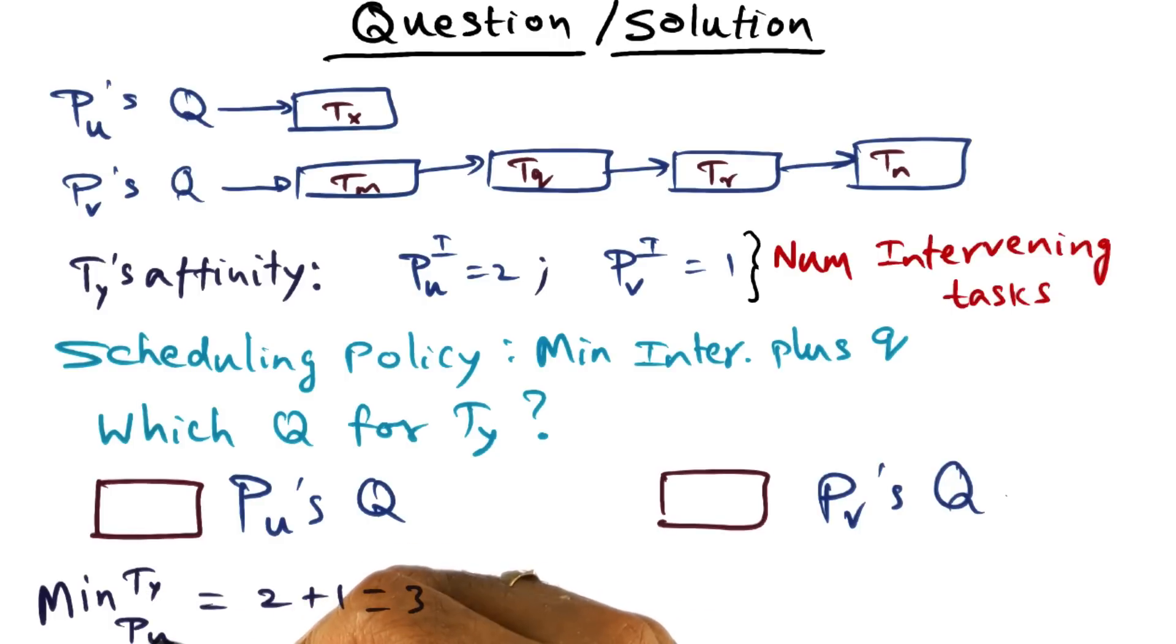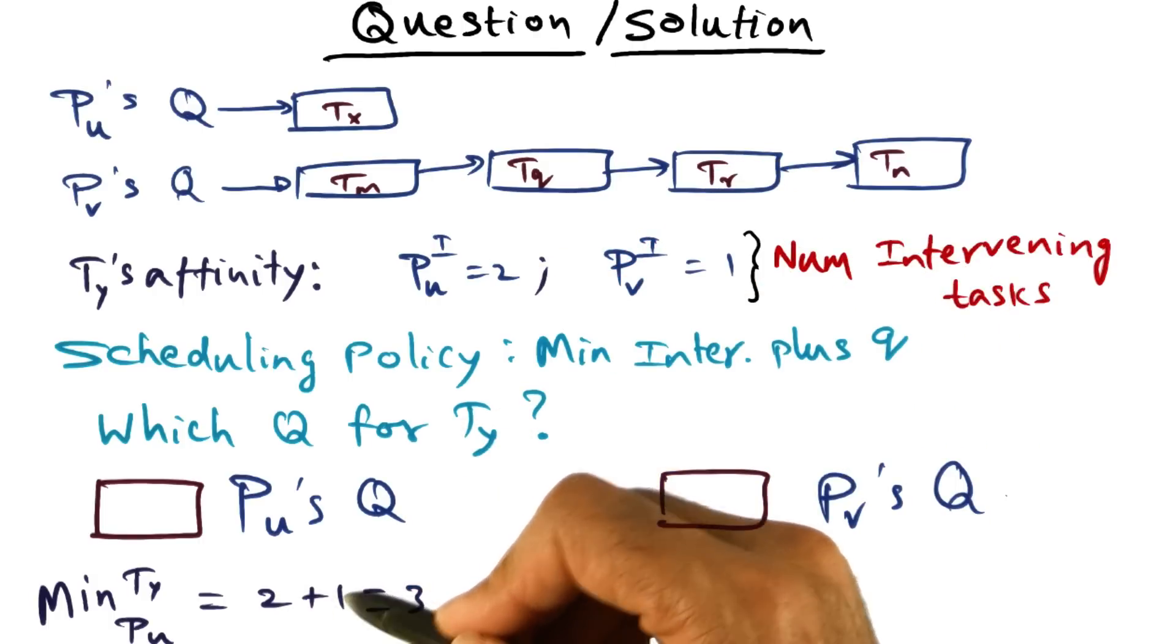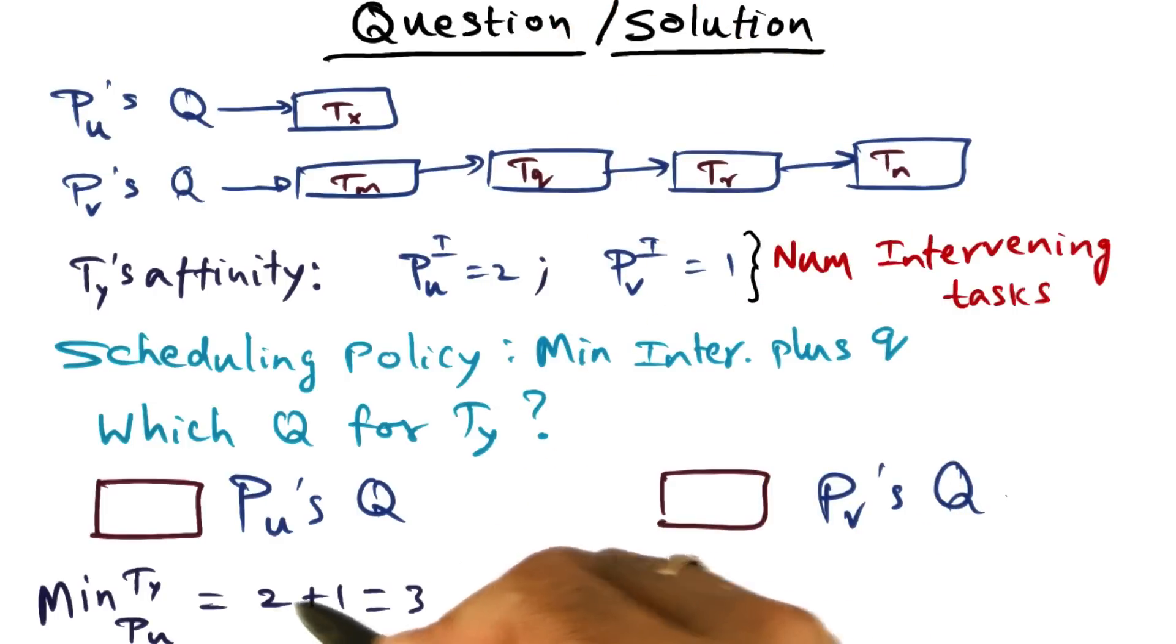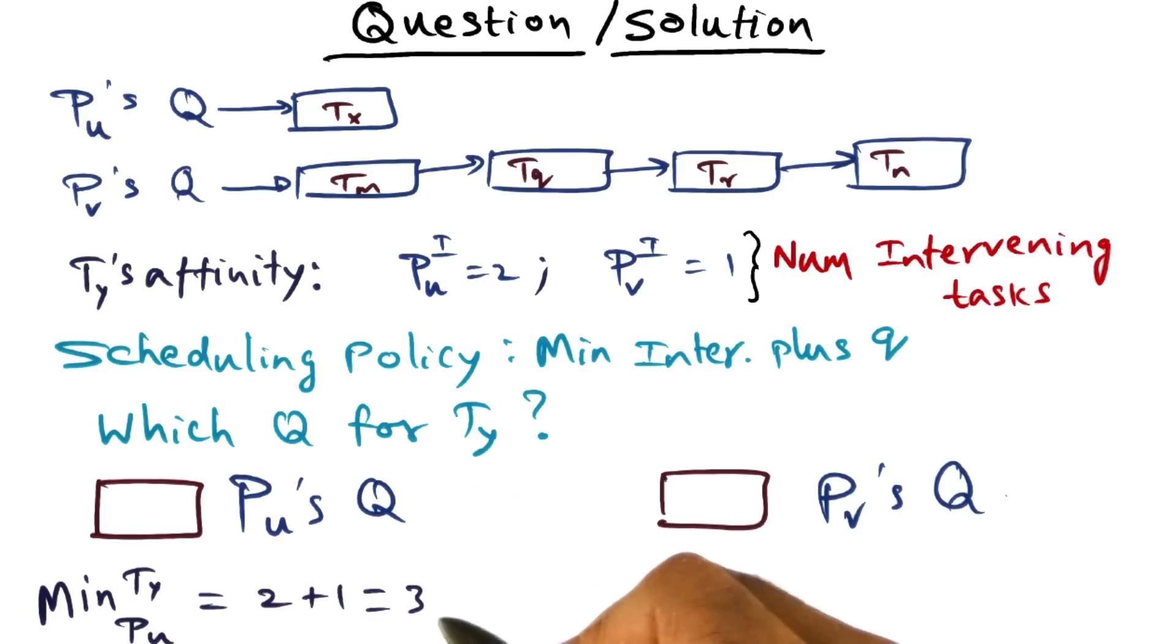The affinity that ty has on pu is two, but also we have to look at the queue size, and the queue size of pu is one. There's only one thread sitting there. So the overall min of i plus q for ty with respect to pu is three.